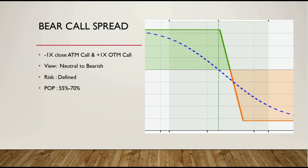We have 4 strategies in high IV conditions. We will be able to do neutral strategies in high IV conditions. We will review the structure, view, risk-reward, and probability. Thank you.